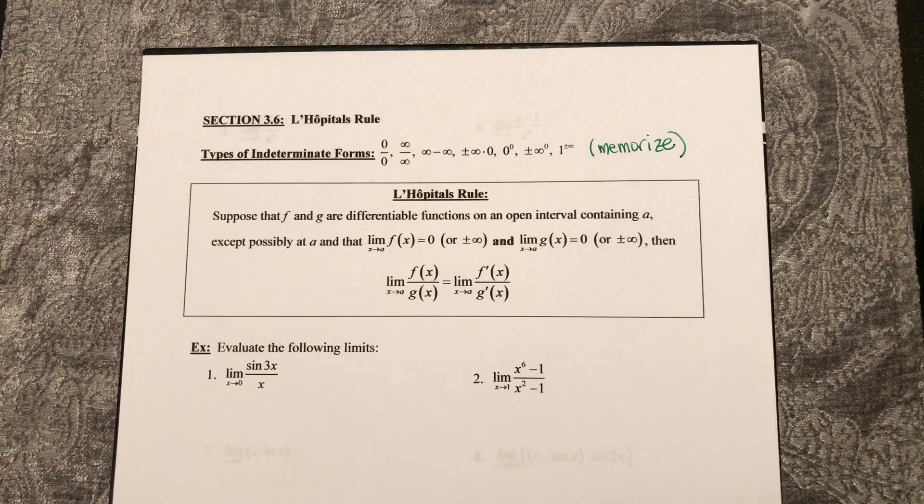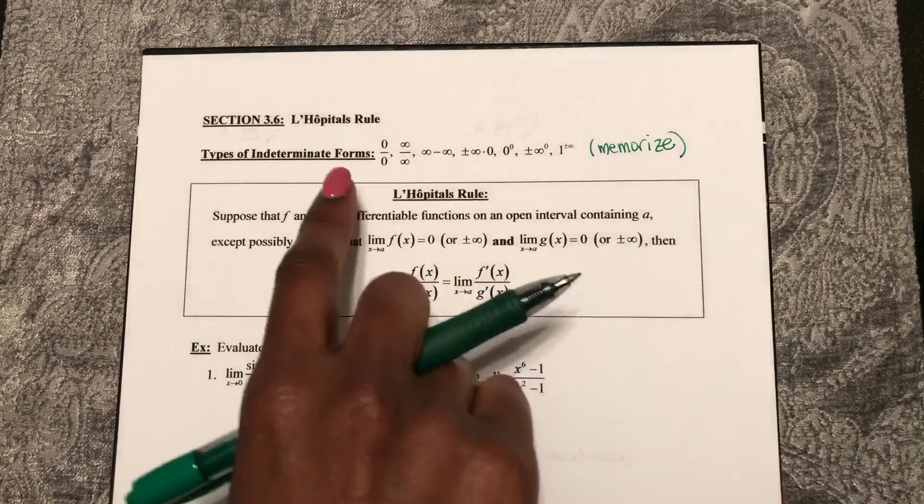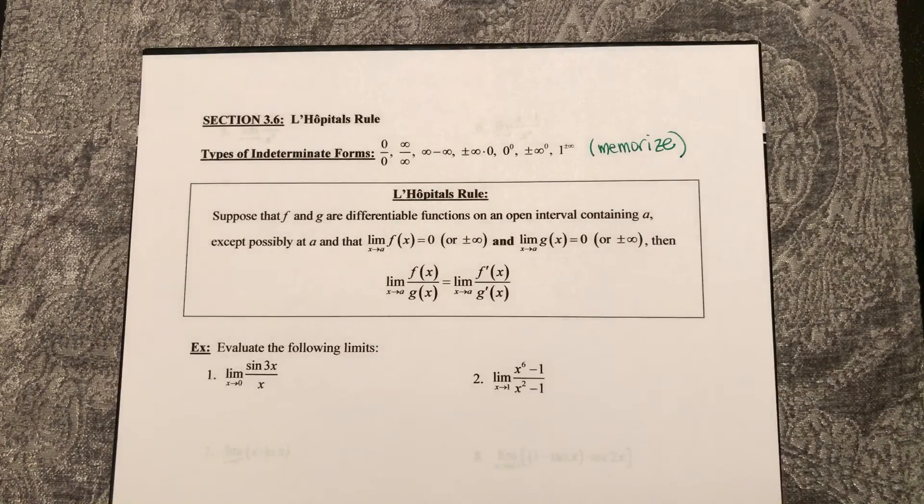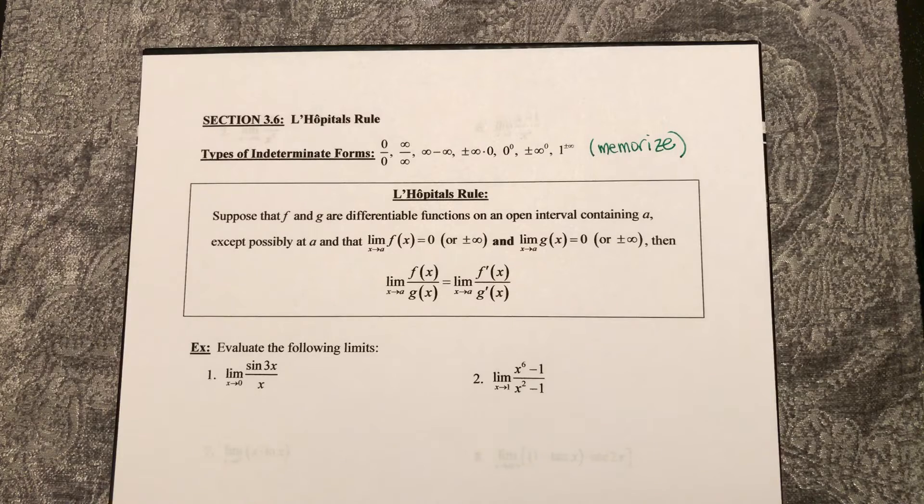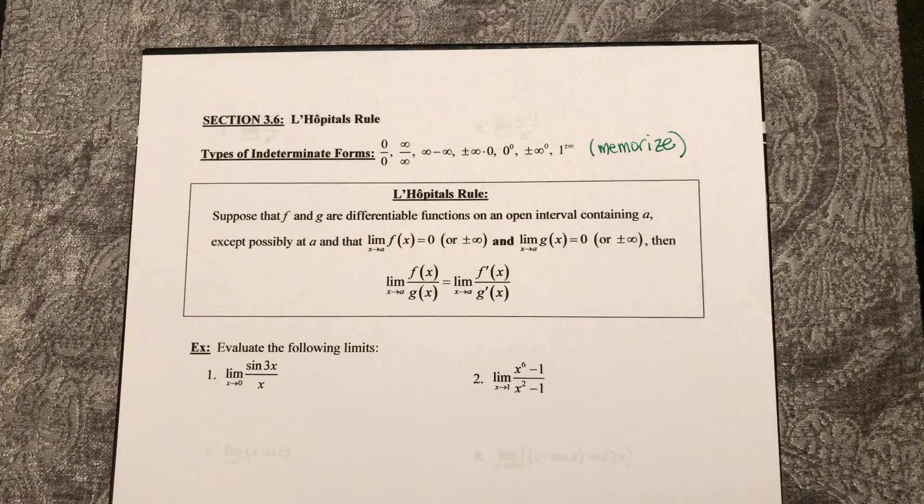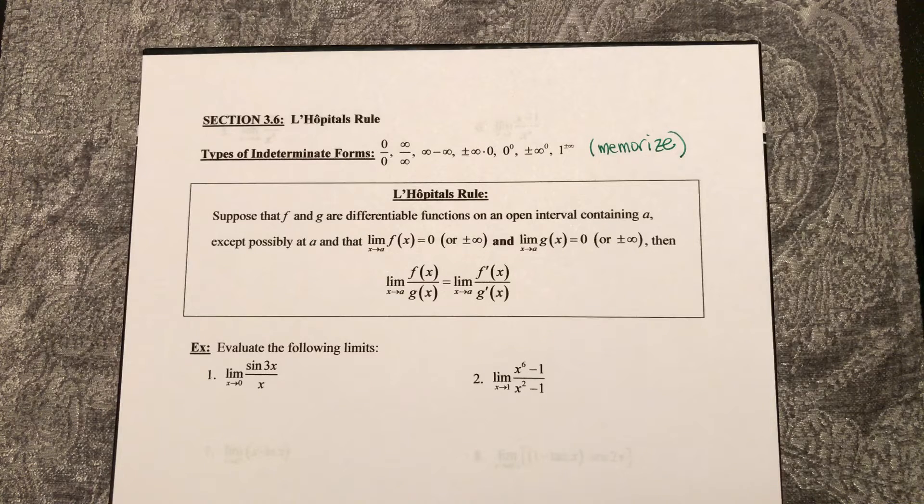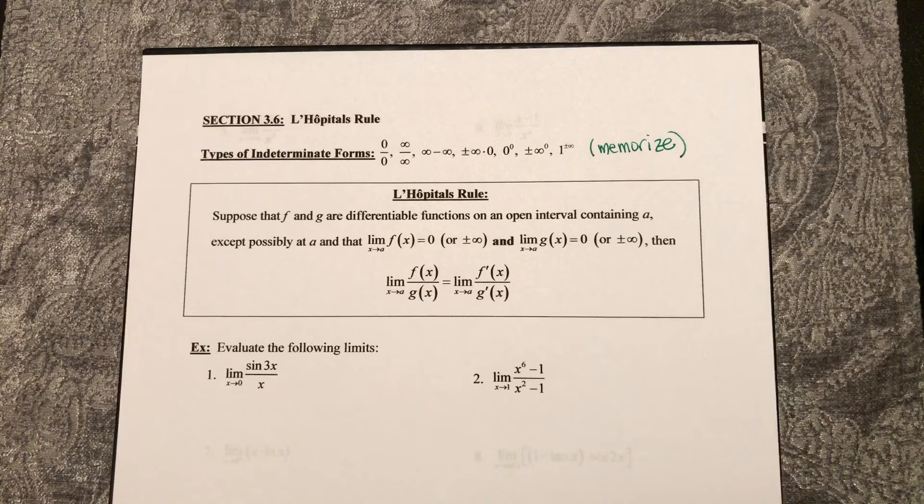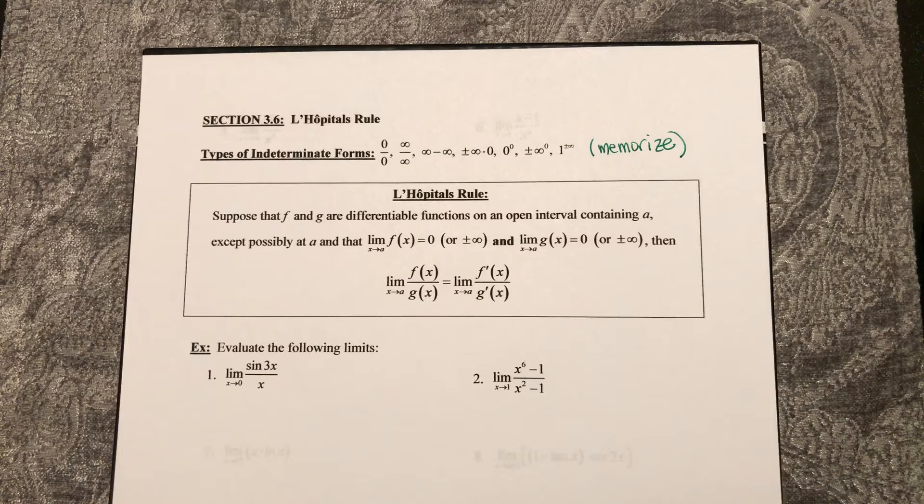So if you memorize these seven indeterminate forms and you see any of them pop up, then we know that we need to use L'Hôpital's rule. Now for the AP AB test,